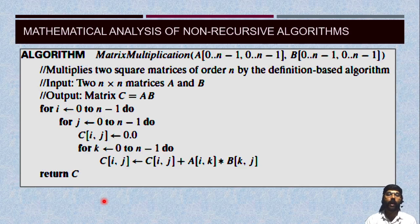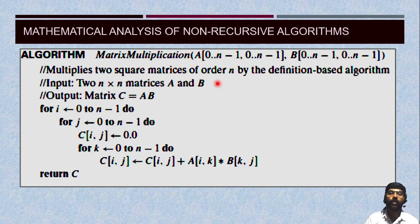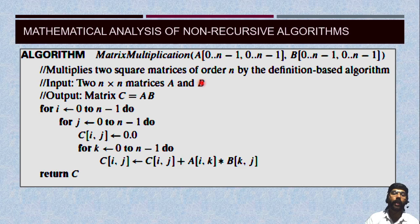I will explain how the algorithm works. The matrix multiplication algorithm accepts two inputs — matrix A and matrix B. The purpose is to multiply two square matrices of order n, using a definition-based algorithm. The input is two n × n matrices, and the output is matrix C, which is the multiplication of A and B. For this, we need three nested for loops. The outer for loop works row by row, and the inner j loop works column by column. Initially, the elements of C are set to 0.